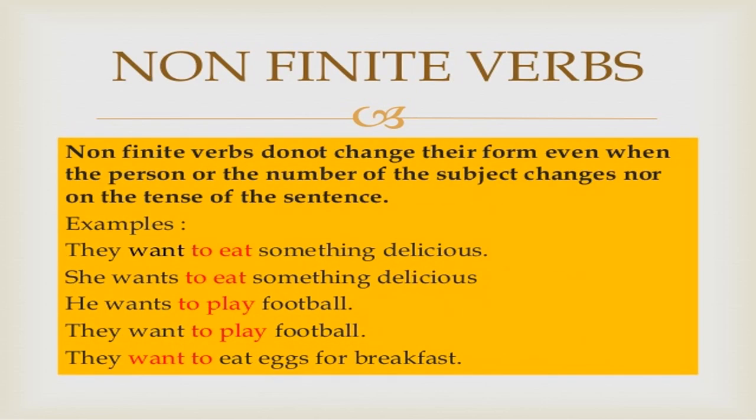There will be non-finite verbs as well and these are just the opposite of finite verbs. Non-finite verbs do not change their form even when the person or number of the subject changes or the tense of the sentence changes. For example, 'They want to eat something delicious' and 'She wants to eat something delicious' — whether the subject is plural or singular, the verb 'to eat' remains the same. Similarly, 'He wants to play football' and 'They want to play football' — the verb remains in the same form 'to play'. These kinds of verbs, unaffected by subject, number, or tense, are called non-finite verbs.